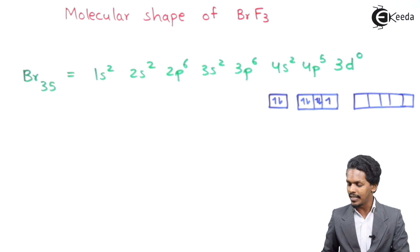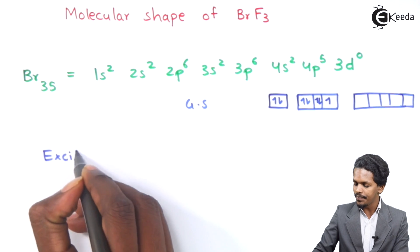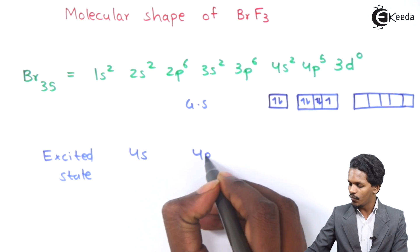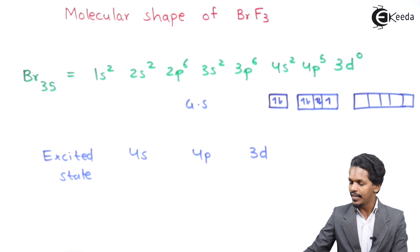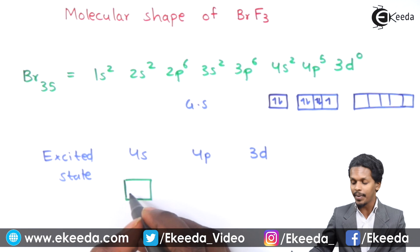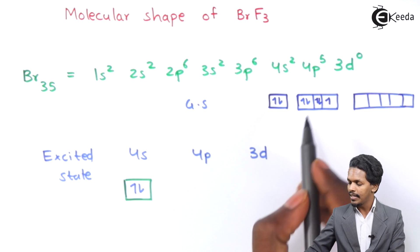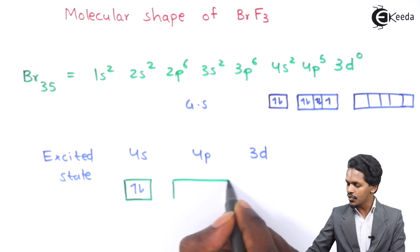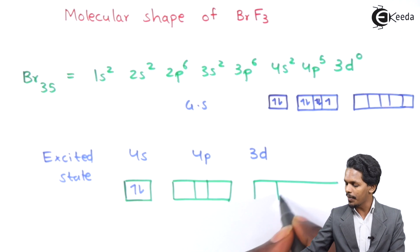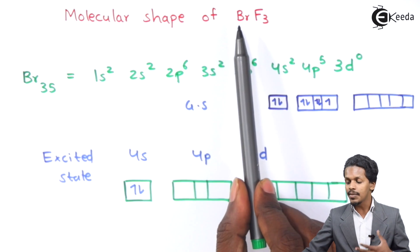Now considering the excited state: we have 4s, 4p, and 3d orbitals. The 4s orbital consists of two paired electrons. The 4p sub-shell consists of three orbitals as mentioned, and the 3d sub-shell consists of five orbitals.